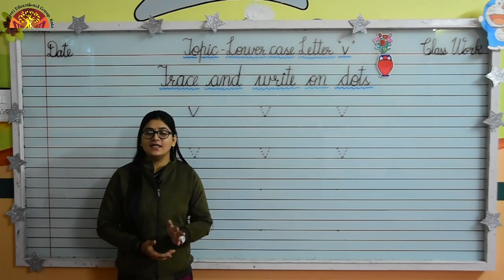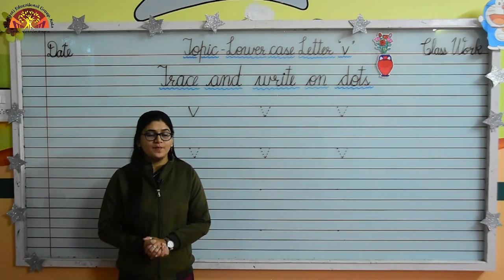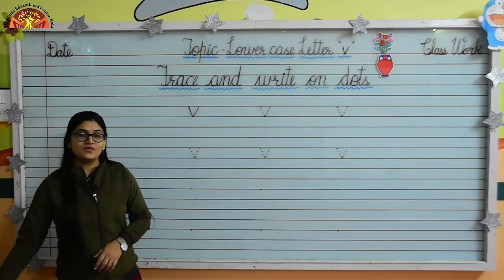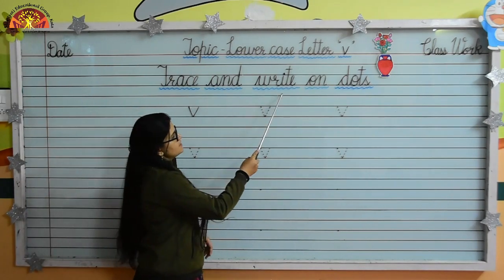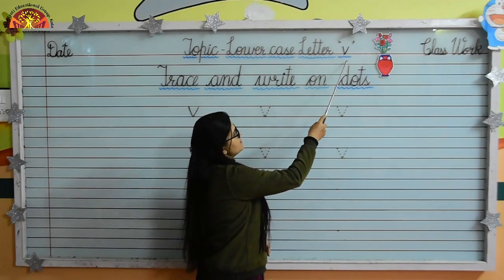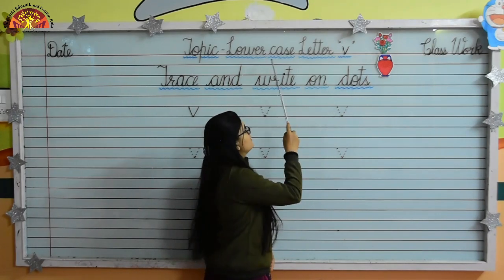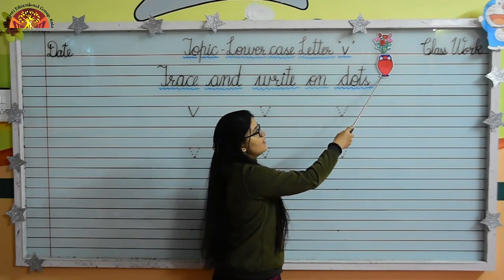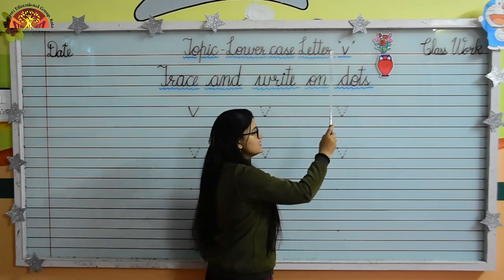So kids, in the earlier class we have learnt about lowercase letter U. And now today we are going to learn how to trace and write lowercase letter V on dots. Lowercase letter V. V for vase.